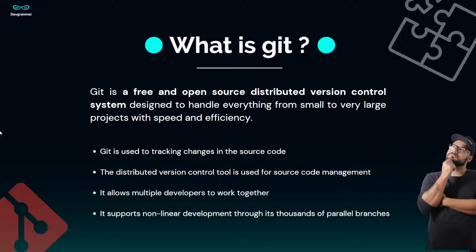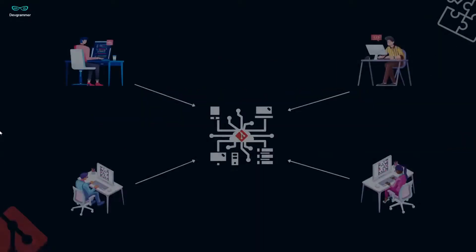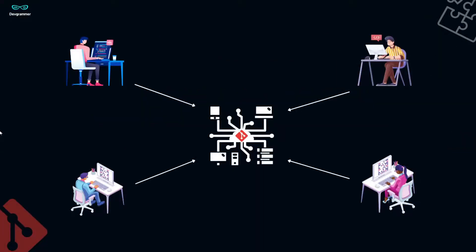The second feature of Git is that it can be used for source code management. The next feature is that it allows multiple developers to work together, as in the example of you and your friends working on a project. And the last important feature of Git is that it supports non-linear development — you and your friend can work at the same time on your project with the help of different branches. This image perfectly defines what Git is and what Git can do as a version control system.